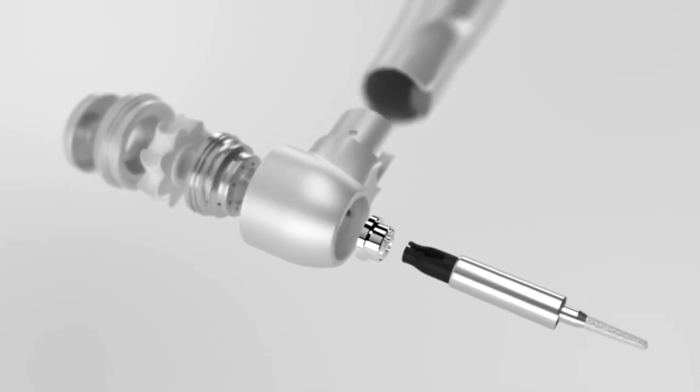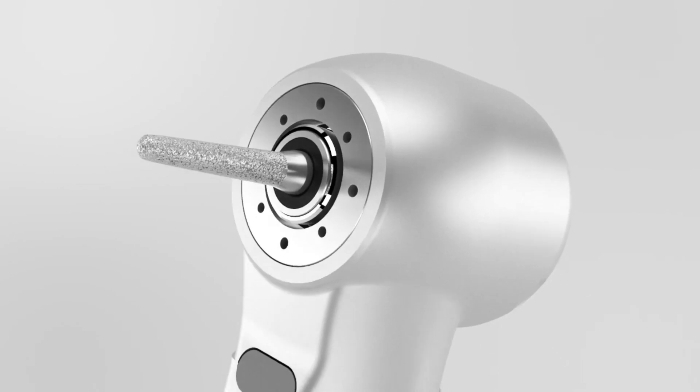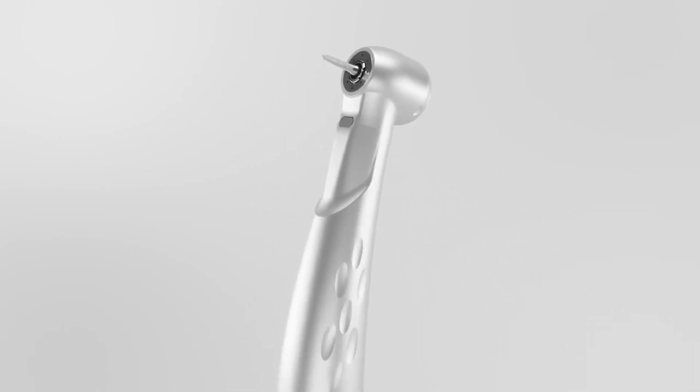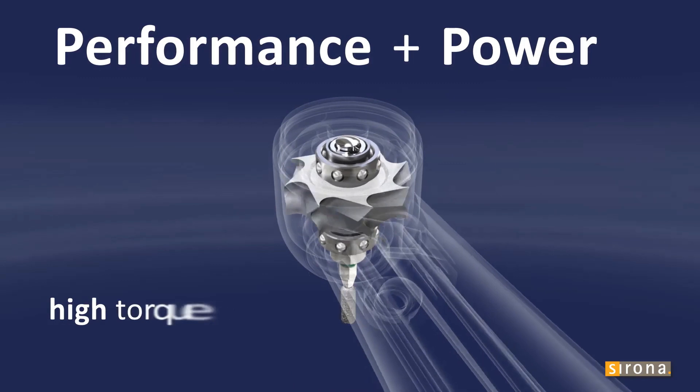High-speed attachments have a chuck gear five times smaller than the drive gear. Slow-speed handpieces have chuck gears that are larger than the drive gear, which decreases the speed of the burr.